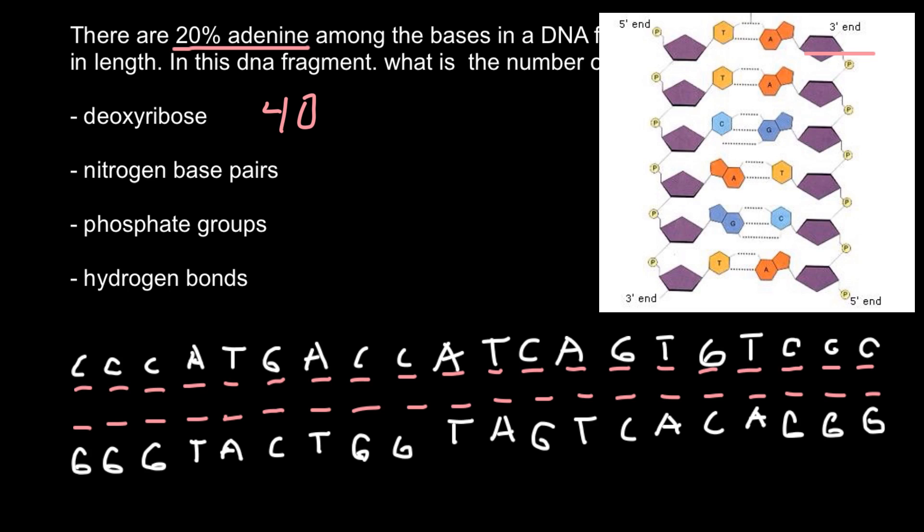And next question, how many nitrogen base pairs we have here? So we have 20 bases on one strand, 20 bases on the other strand. These bases are complementary. So we have 20 base pairs here. So we put 20 as an answer here.